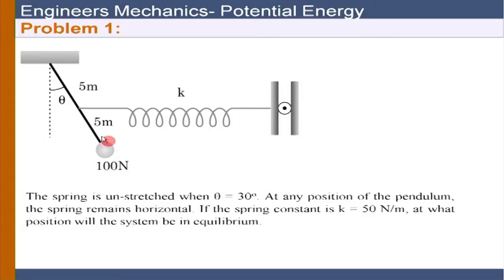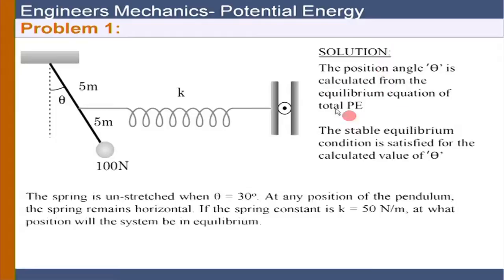How do we determine the potential energy of this rigid body system? We can easily choose our datum right at the hinge location. The potential energy must be determined with respect to a fixed datum point. That gives us the height of the body and therefore the potential energy of the weight, and then we can get the spring force based on how much the spring is stretched at configuration theta.